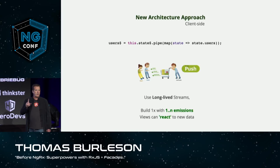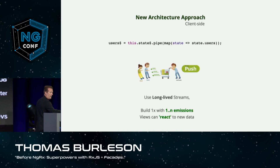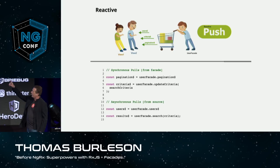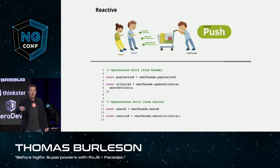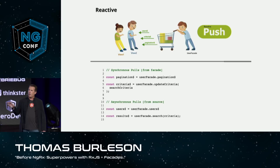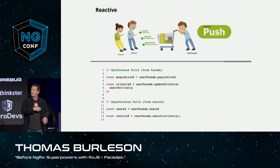And our views — this is the most important thing — our views can react any time the data comes out with a new list of users. Here are some examples of push-based API usage. We're using a user facade and we have a pagination stream, just getting a reference to it. We're calling an update criteria method with some search criteria, and getting a criteria stream back. With the user facade, we don't know what's happening under the hood, and we shouldn't care. We just know that we want these streams — they're long-lived, and they'll give us data when it's available.